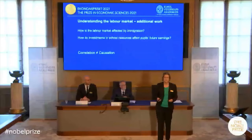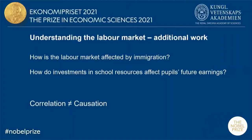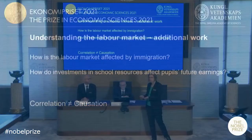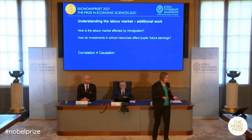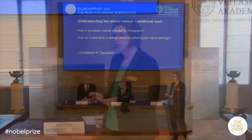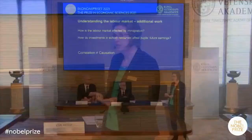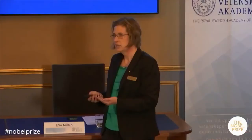Once again, correlation does not imply causation. For example, migrants tend to locate in regions where the labor market is good, so just comparing employment and wages in regions with a lot of immigration versus little immigration will not give you a causal answer. Similarly, if we tend to invest more in schools where pupils perform worse, there might even be a negative correlation between school resources and pupils' future earnings, even though there is in fact a positive causal relationship. By applying natural experiments to analyze these questions, David Card was able to come up with new and more credible answers.